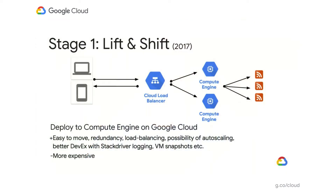At the same time, things were getting more expensive. Instead of running on a single machine shared by other applications, we were running on two dedicated VMs and we had a cloud load balancer as well. Even though it wasn't that expensive, it was more than we wanted for a hobby application. But this setup served us well for a couple of years.